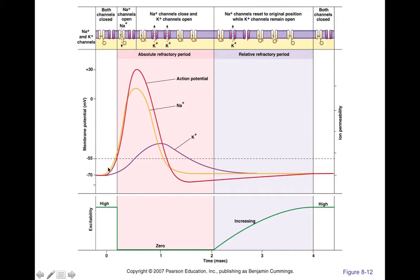Think about it: if action potentials did overlap, it's like information being blended. That would be like having two books and smashing them together so all the letters got jumbled — now the information doesn't make sense and the books are useless. With action potentials, as long as they're separate, that's meaningful information — it's binary, either on or off. If they blend together, you're losing information. So that's why we have an absolute refractory period.